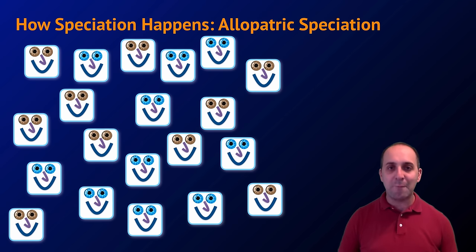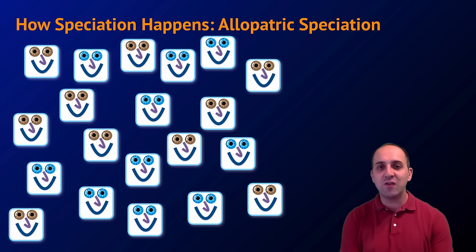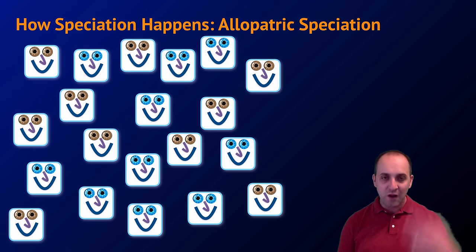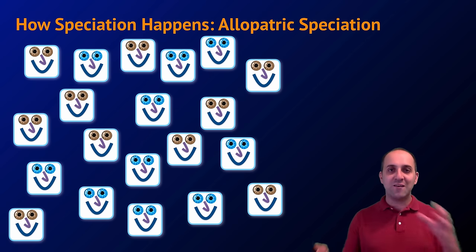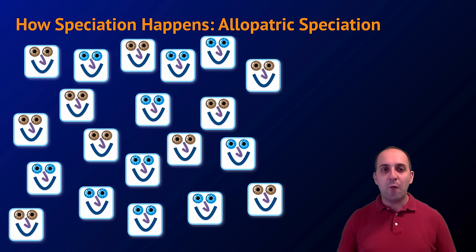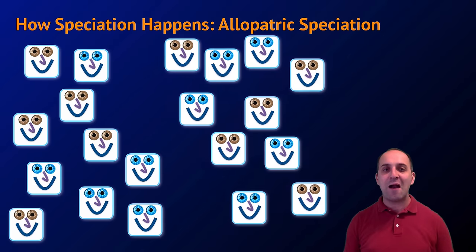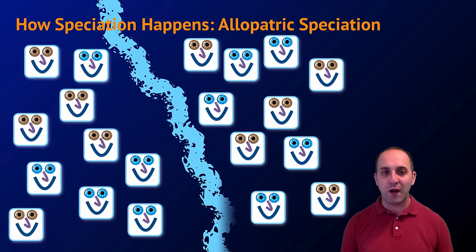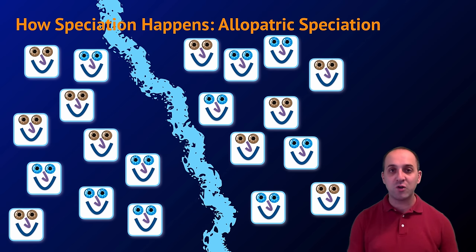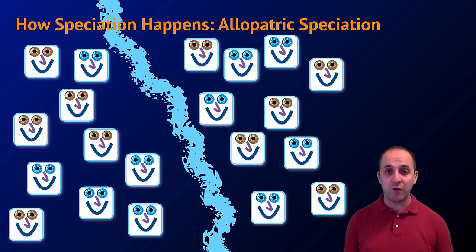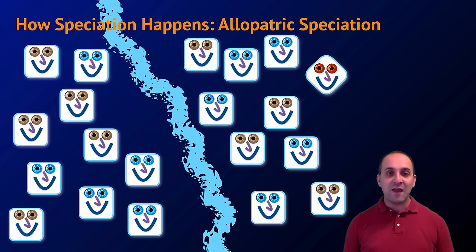There are two different ways that speciation can happen: allopatric speciation and sympatric speciation. Let's do allopatric speciation first. 'Allopatric' really just means 'other country,' and what's going to happen is some sort of barrier — in this case a river — forms and separates two populations from each other. Once those two populations are physically separated, they no longer reproduce with each other, and differences start to accumulate.